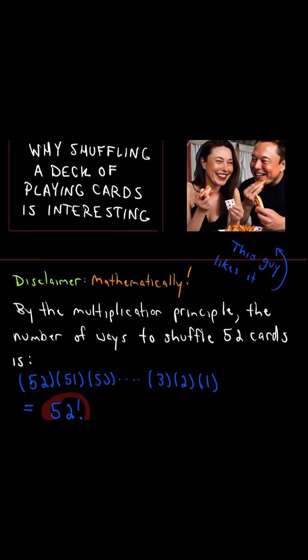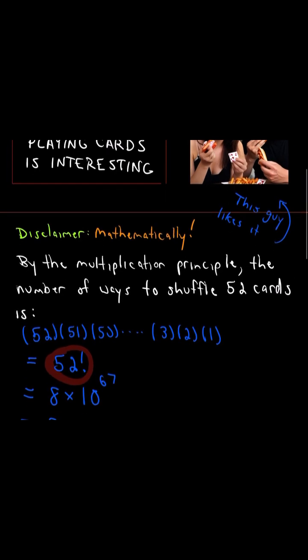So why is shuffling a deck of playing cards interesting mathematically? Well, the idea is we can use the multiplication principle to count the number of ways to shuffle 52 cards.